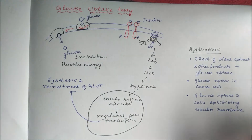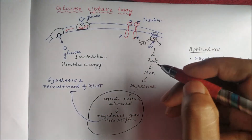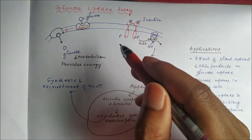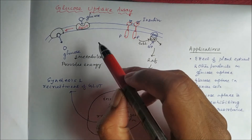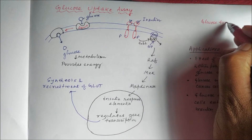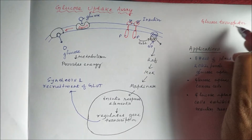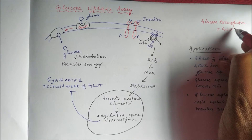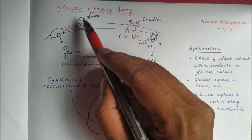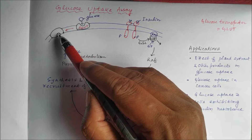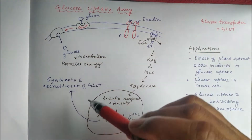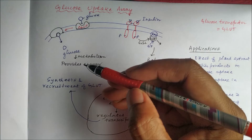Today we will study the glucose uptake assay. Glucose is a water-soluble molecule, so it needs a carrier to enter into the cell. That carrier is called a glucose transporter, or in short, GLUT — where GLUT stands for GLUcose Transporter. When glucose binds to the GLUT, the GLUT places the glucose into the cell. Glucose is the source of energy.